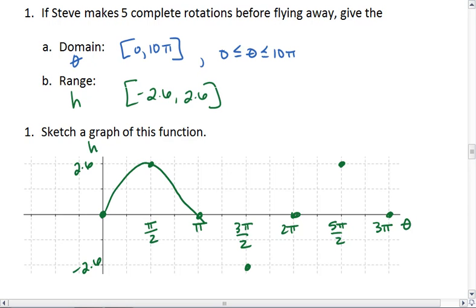We don't have to graph the full 10 pi, but we do need to indicate that Steve keeps going off to the right. And there's our graph.